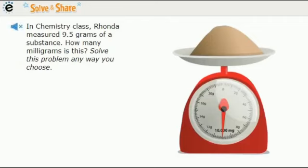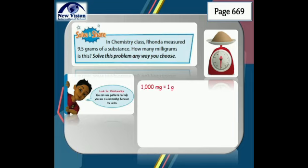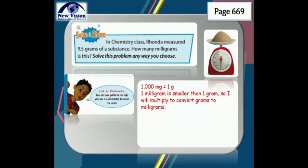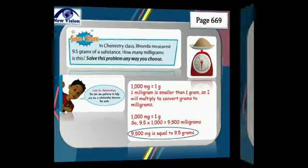In chemistry class, Ronda measured 9.5 grams of a substance. How many milligrams is this? To solve, we find the conversion factor: 1,000 milligrams equals 1 gram. Since 1 milligram is smaller than 1 gram, we multiply to convert grams to milligrams. So 9.5 times 1,000 equals 9,500 milligrams. Therefore, 9,500 milligrams is equal to 9.5 grams.